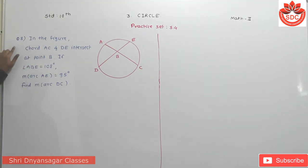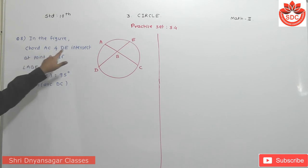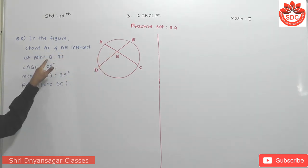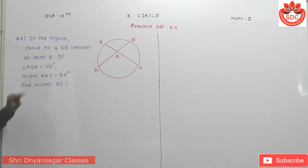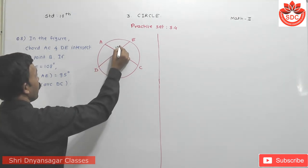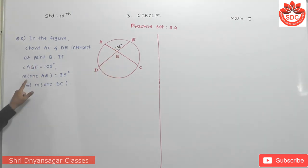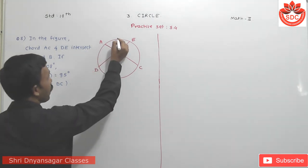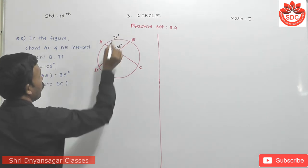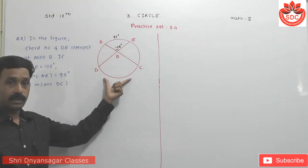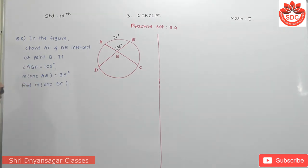The last question, question number 8: In this figure, chord AC and chord DE intersect at point B. If angle ABE is 108 degrees and the measure of arc AE is 95 degrees, find the measure of arc DC.